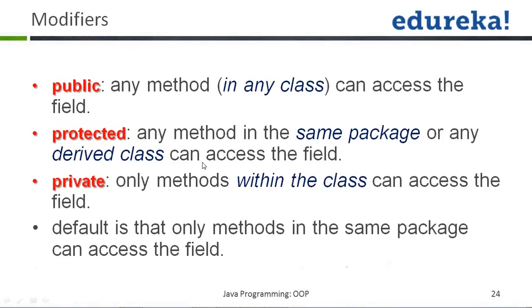Now modifiers are used with methods, classes, and throughout the application. The first modifier is public. Any method in any class can access a public field — that means if any entity is declared public, it can be used all over the application, whether it's a variable, a method, or a class. Like a government park — anyone can go there.